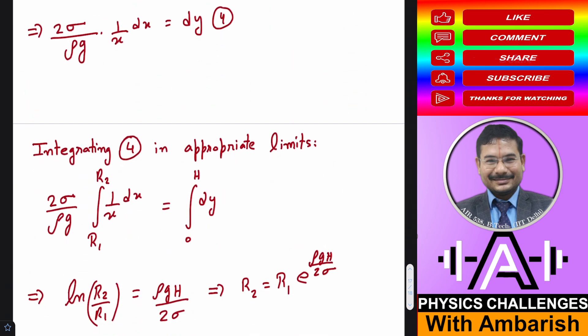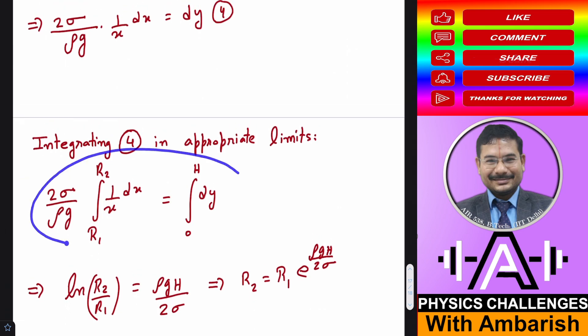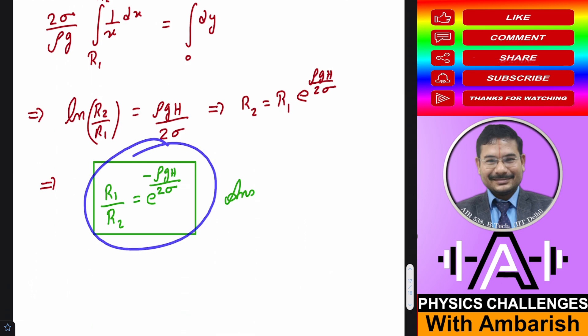So in appropriate limits now we integrate. And what do we get after integration? log of R2 by R1 is ρgh by 2σ. So R2 is R1 e to the power ρgh by 2σ, or we can say R1 by R2 is e to the power minus ρgh upon 2σ.